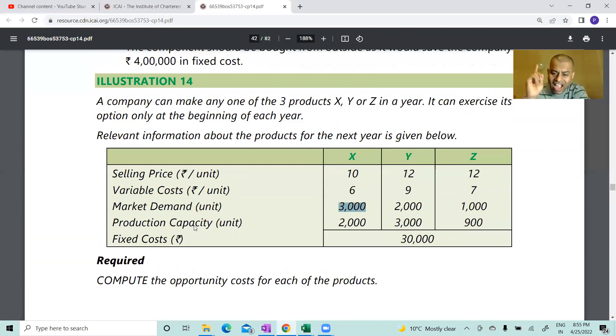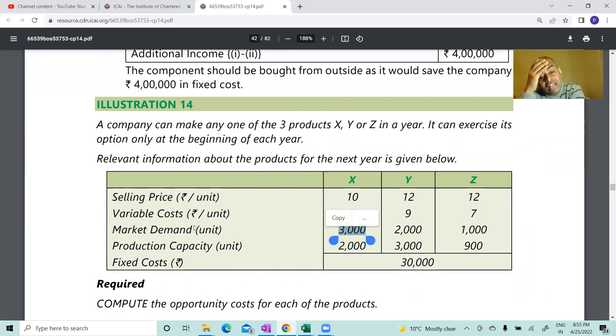So I'm seriously thinking, am I missing any loop? Am I missing anything? A company can make any of the three products. It can exercise its option at the beginning of year. Relevant information about the product for the next year - full year: 10, 6, then 4 rupees contribution. 2000 units I manufacture, 8000 rupees I'll get. 30,000 rupees fixed cost. I'm unable to digest this, but of course anyway, fixed cost is irrelevant for decision making. Or maybe we'll remove one zero - fixed cost to 3000, still problem makes some sense. I don't know. So you understand problem number 14? Any doubts?